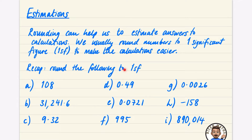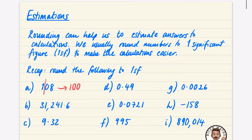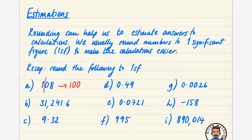We're going to do a quick recap: rounding these numbers to one significant figure. You draw a line after the first significant figure to help you decide whether it's going to round up or stay the same. For 104, the zero means it stays the same — it rounds to 100. For 31,241.6, we draw a line after the three; the one means it rounds to 30,000. For 9.32, the three means it stays as 9.